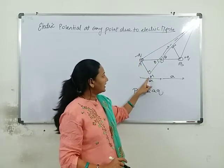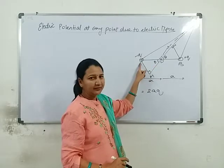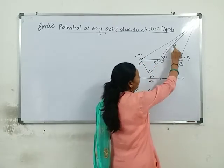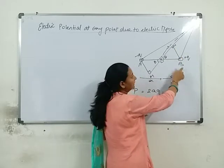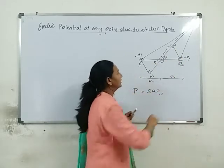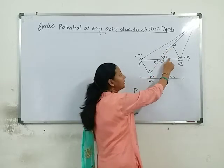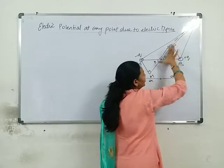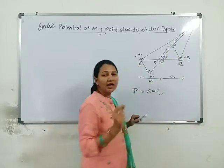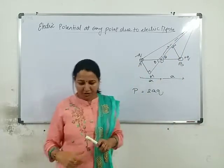Here we have to find right triangle O, M, A, and here we have to find right triangle O, N, B — both at 90 degrees. The distance from O to point P is taken as small r.